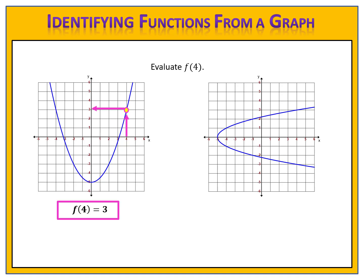On the second graph, we're looking for the output when the input is 4. We go over to 4 on the input, or x-axis, and we look for the points. There are two of them — one up here and one down here. We go across to get the outputs. The outputs are positive 3 and negative 3, so when the input is 4, the output is positive or negative 3.